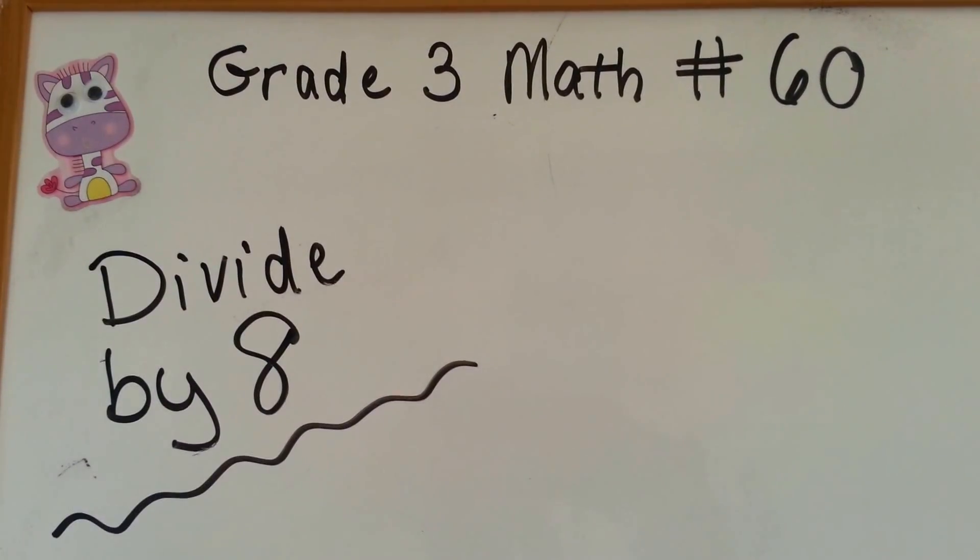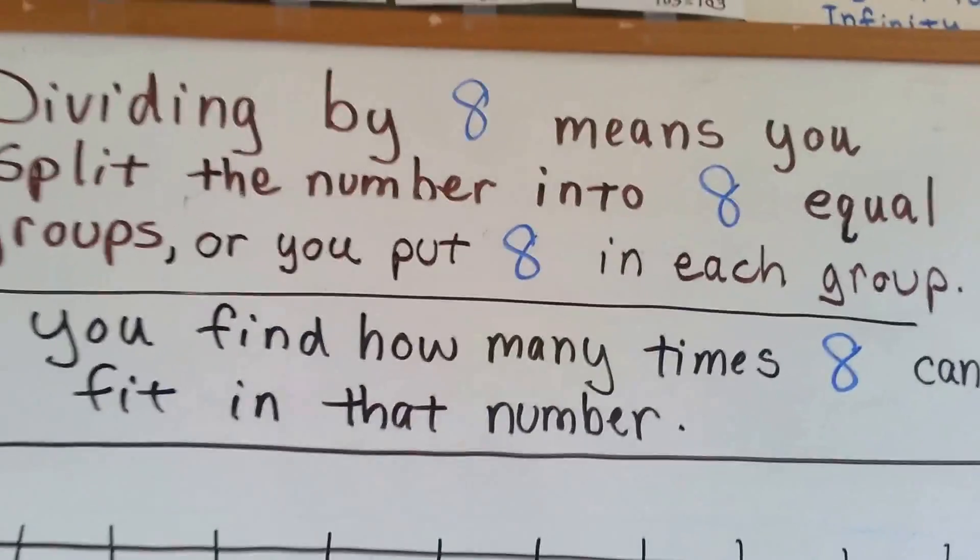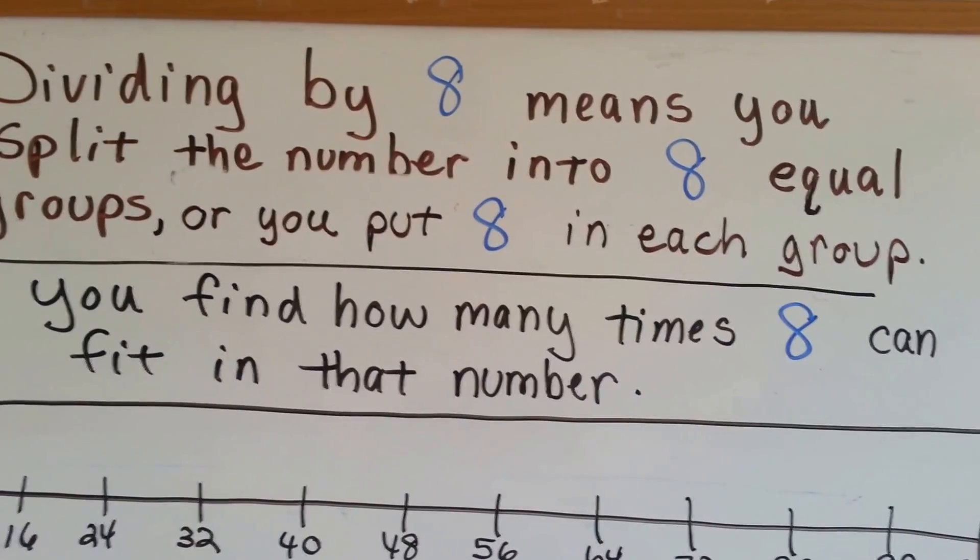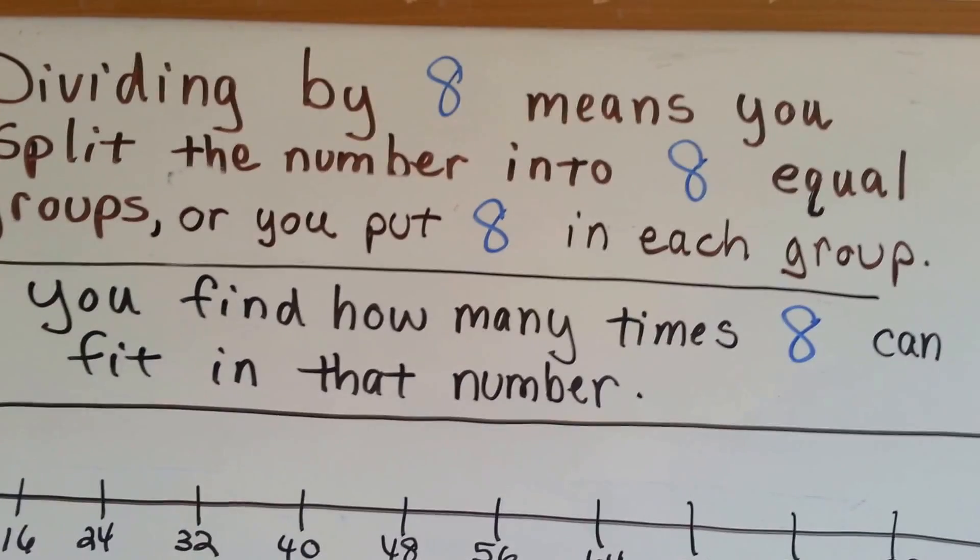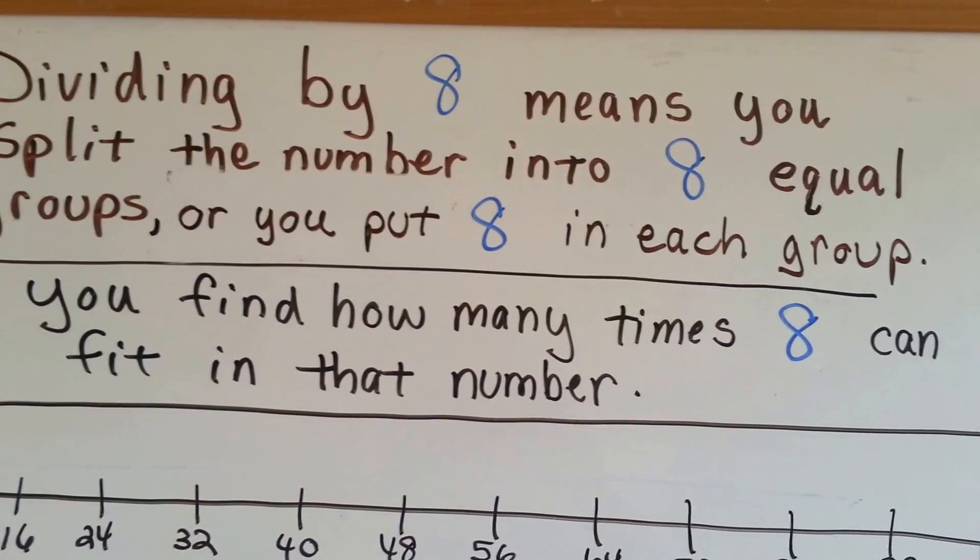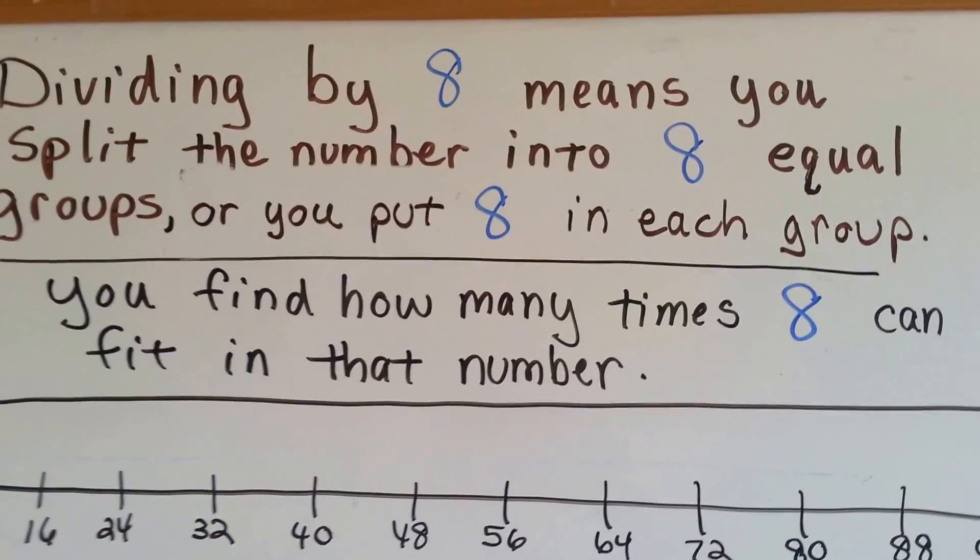Grade 3 math number 60, divide by 8. Here's our rule: dividing by 8 means you split the number into 8 equal groups, or you put 8 in each group, either way. You find how many times 8 can fit into that number.